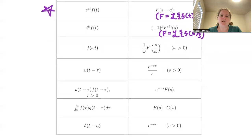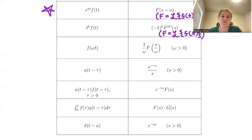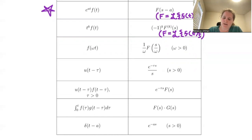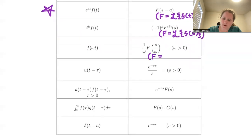If we have a horizontal stretch or dilation — f of omega times t — that also appears as a vertical and horizontal stretch or dilation of our Laplace transform. Capital F is the Laplace transform of lowercase f of t.